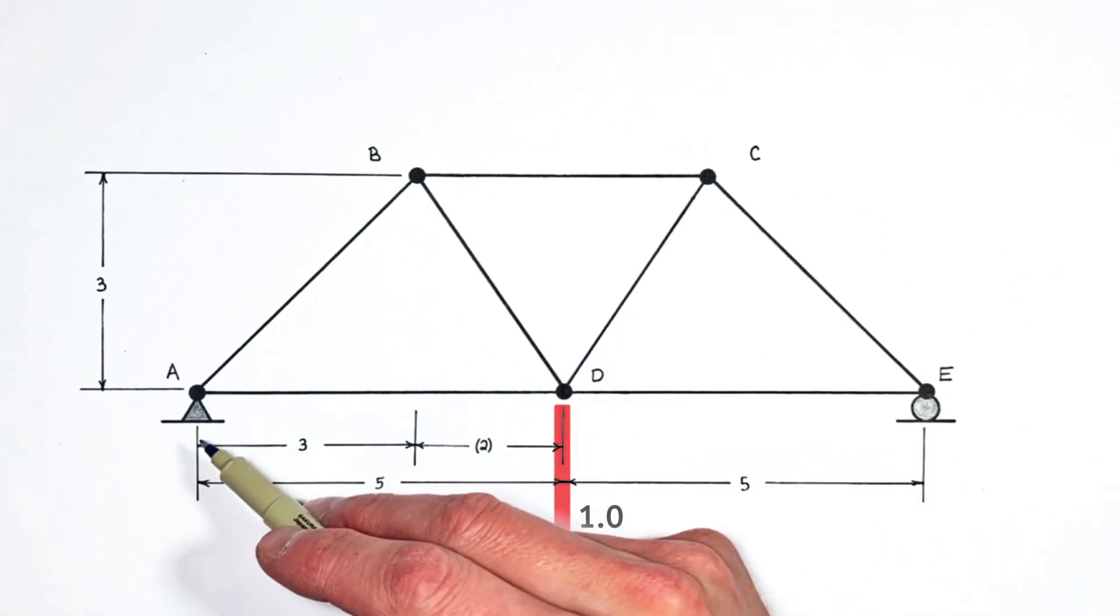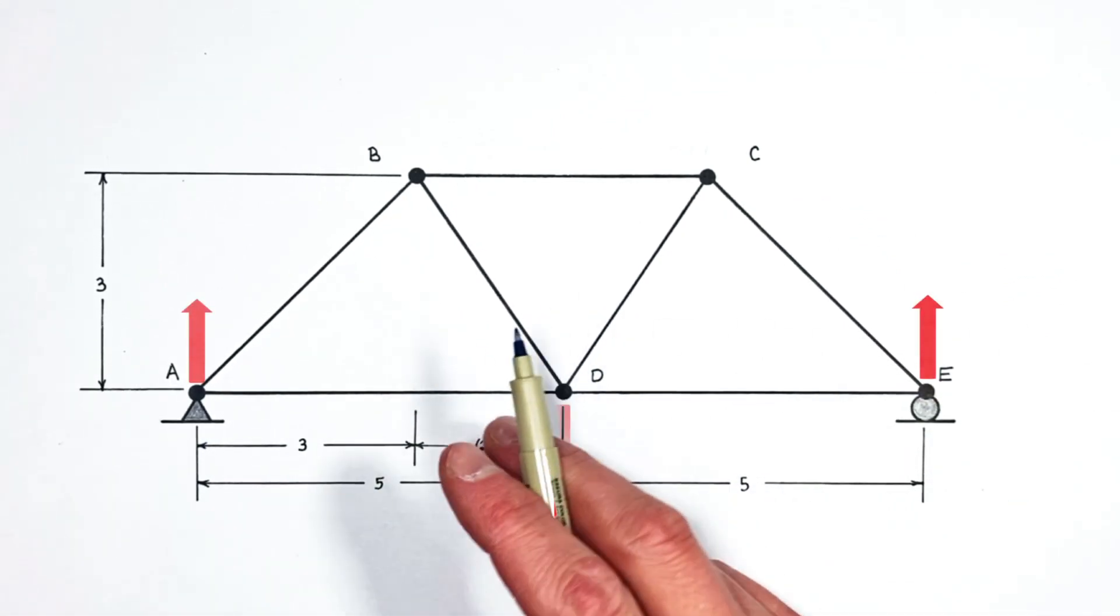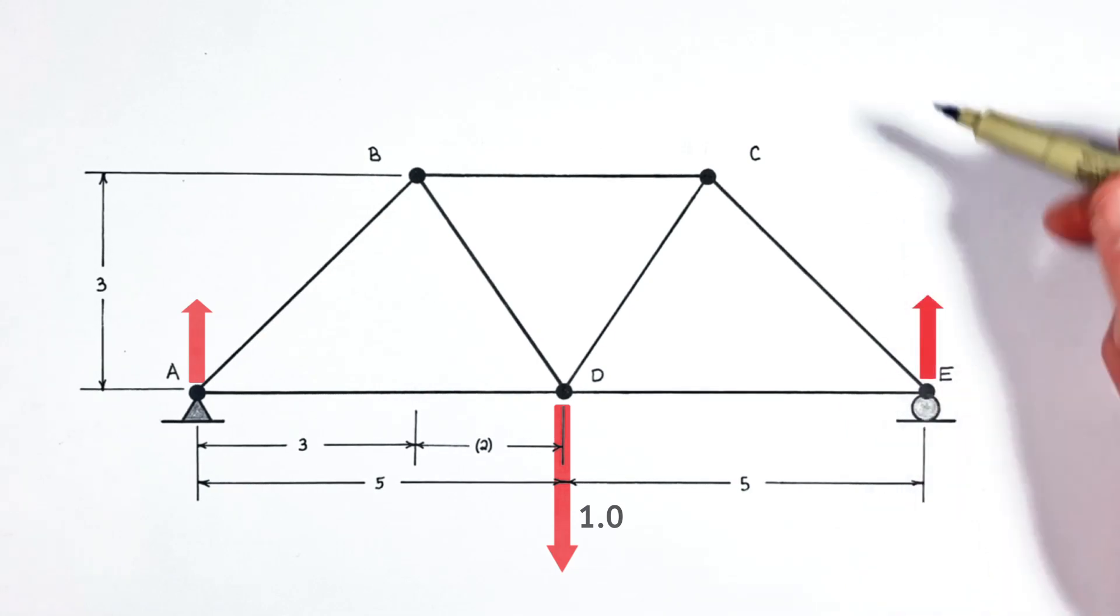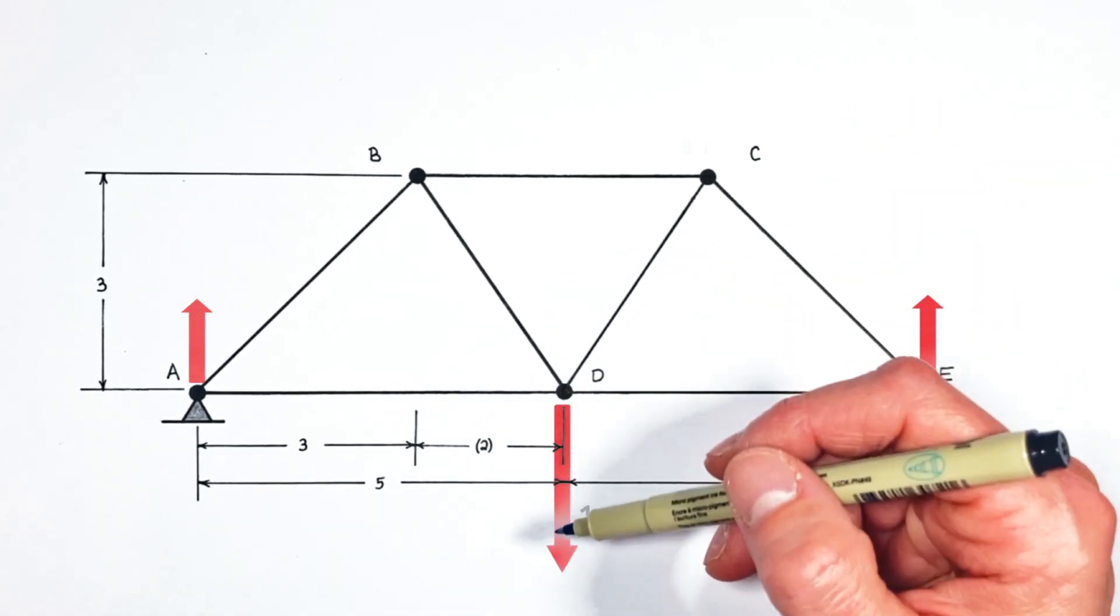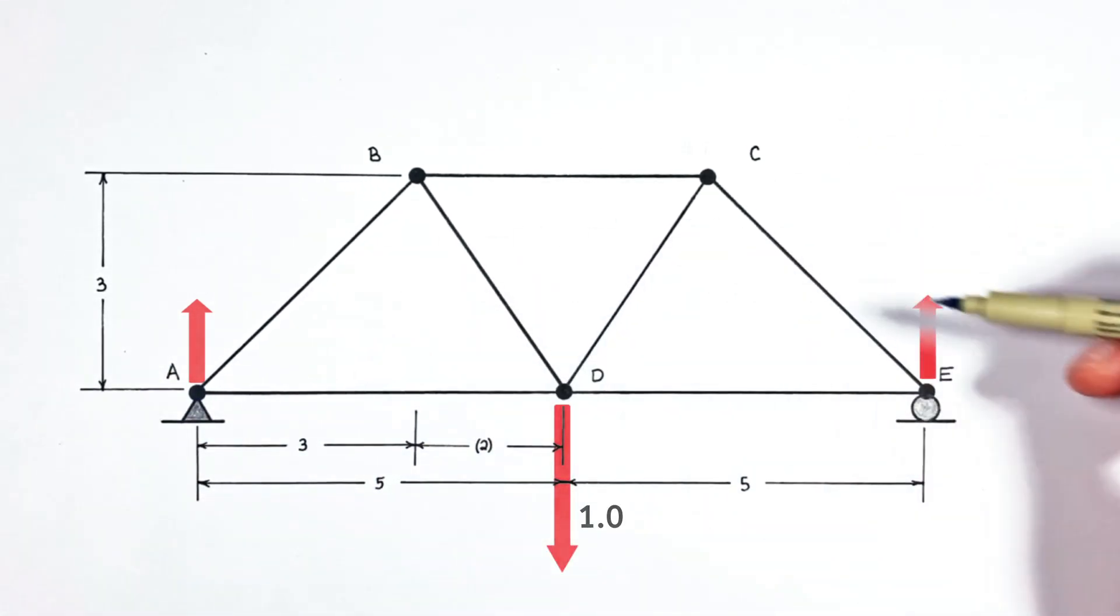Now starting with the reaction forces by the supports, this truss is symmetric from left to right. And what that means is the downward force by the load is going to be counteracted by the two supports evenly, meaning there's half the load on each support.